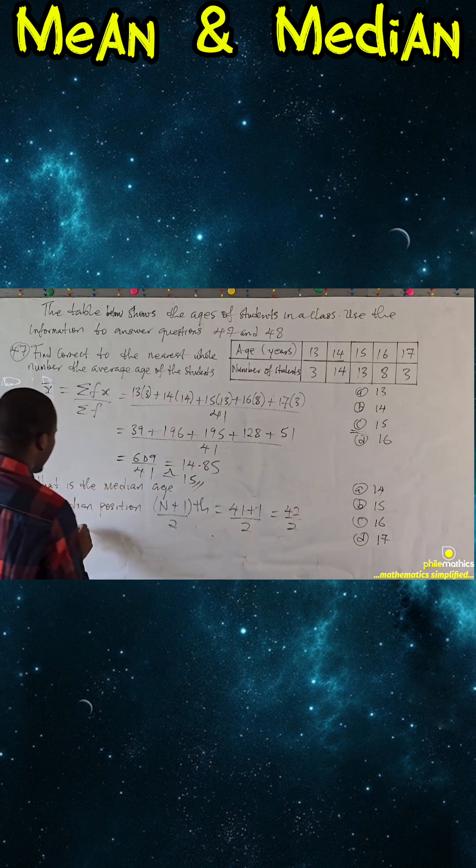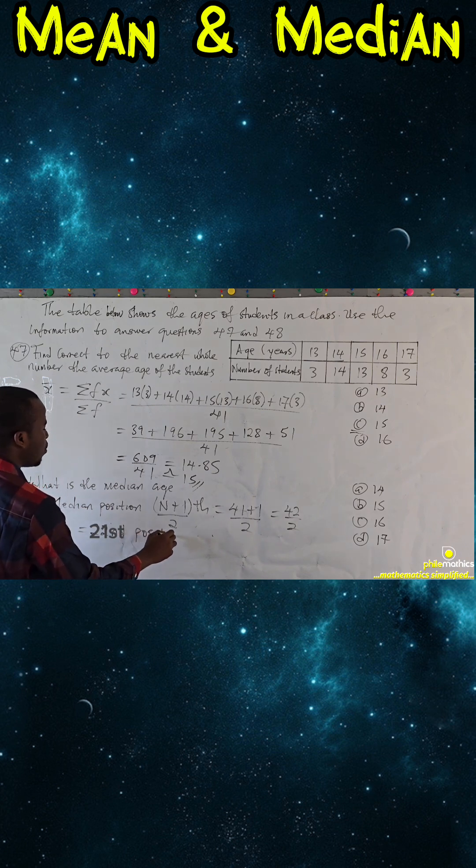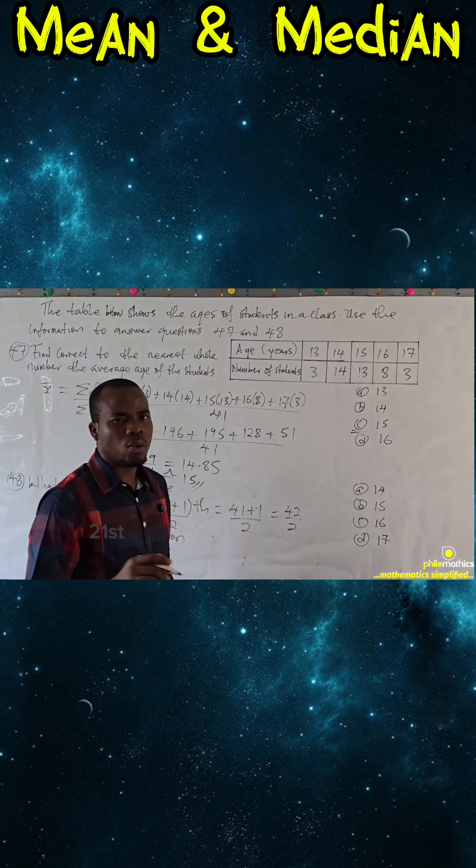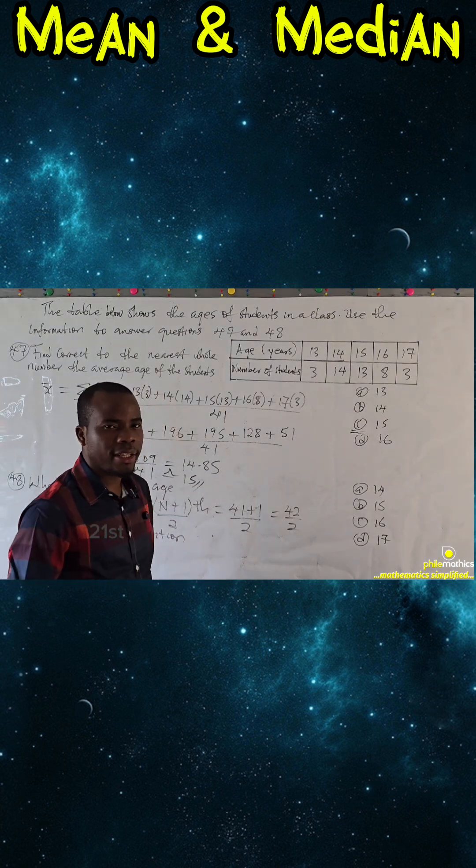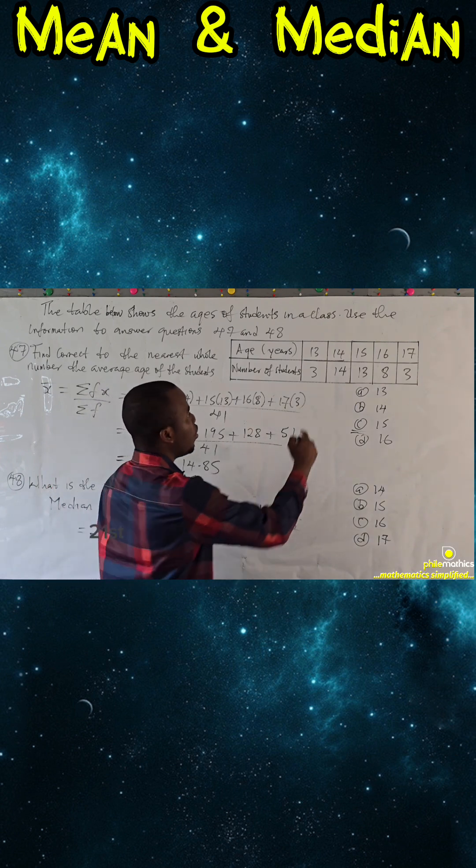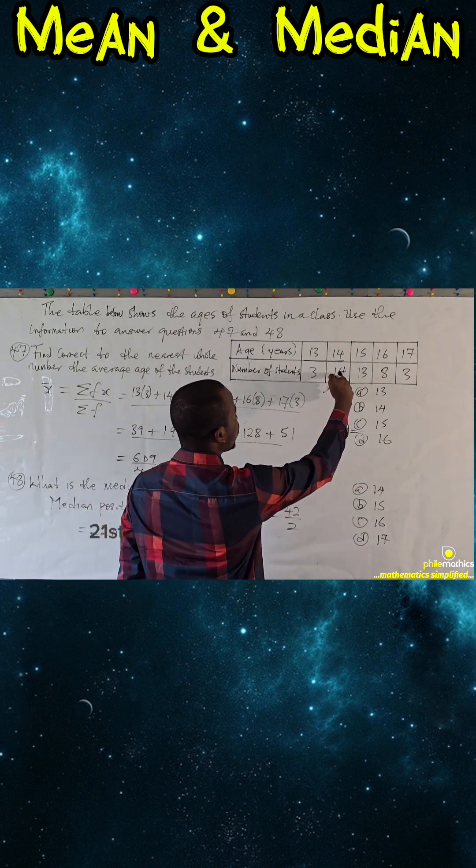That is our median. How do we get the position? We start taking cumulative frequency. So 3 plus 14 is 17.